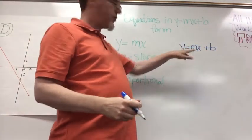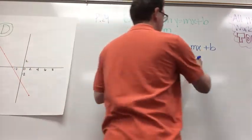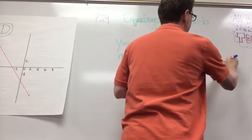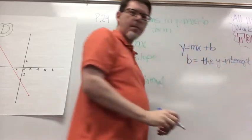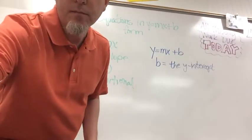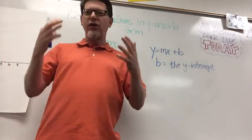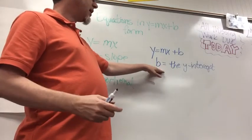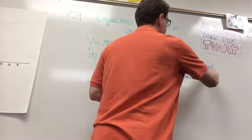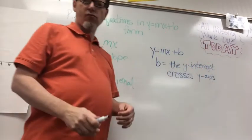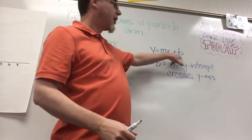Now m is still the slope, just like it was over here, but b is the y-intercept. The y-intercept is the place on the graph where my line crosses the y-axis, and whatever the place is where it crosses the y-axis, I plug in for b.